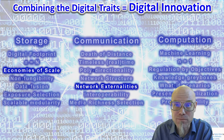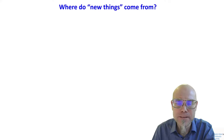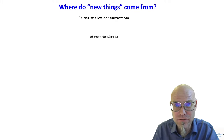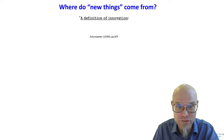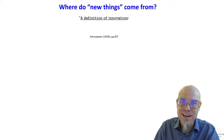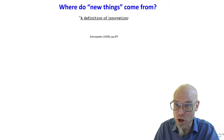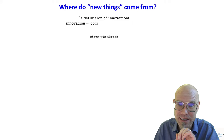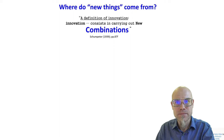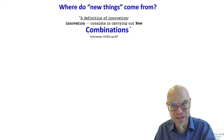Let's get going with the theory. What is innovation? Where do new things actually come from? We take a definition from the economist Joseph Schumpeter, called the prophet of innovation, who has a definition commonly used nowadays: innovation consists in carrying out new combinations. So innovations are just combinations.